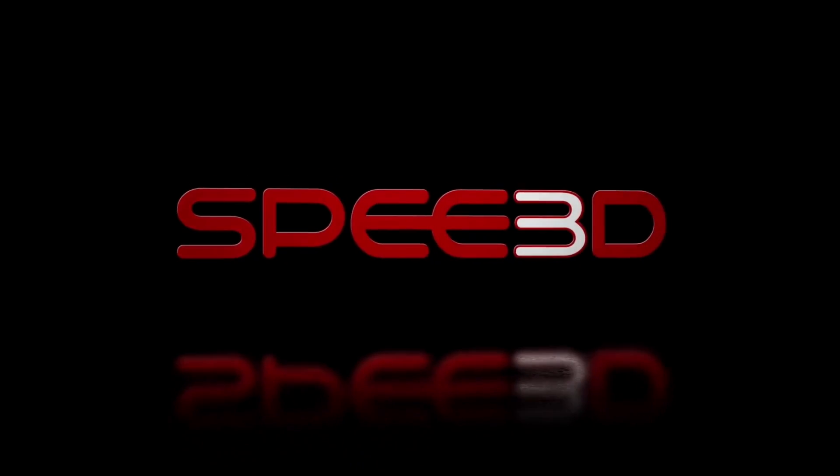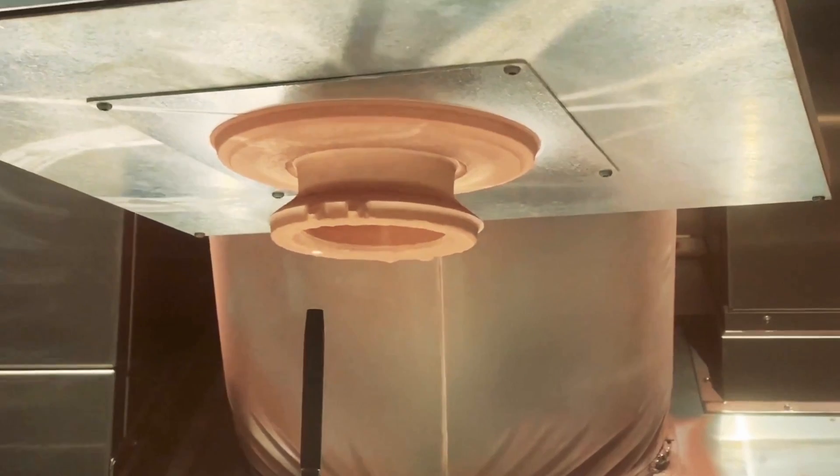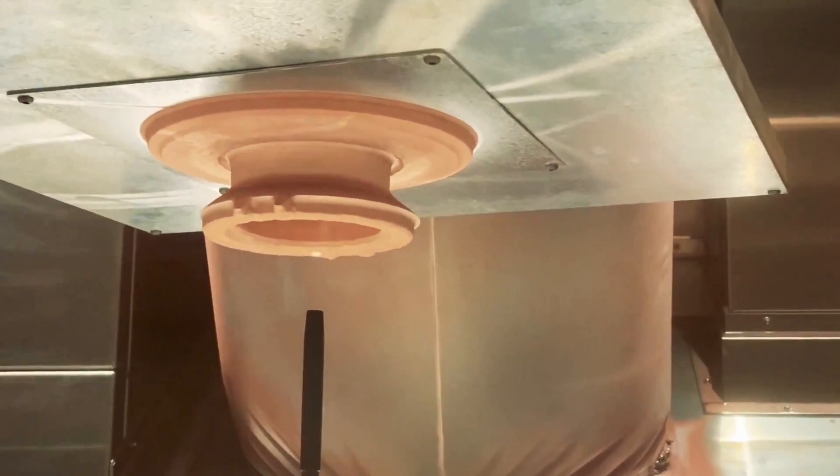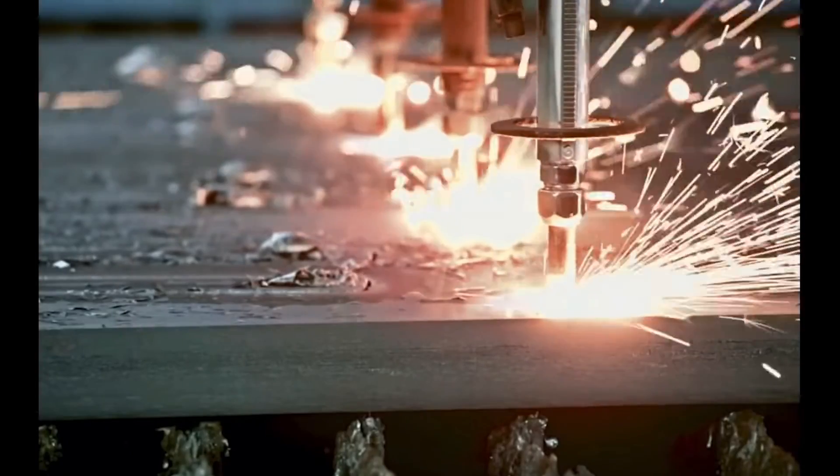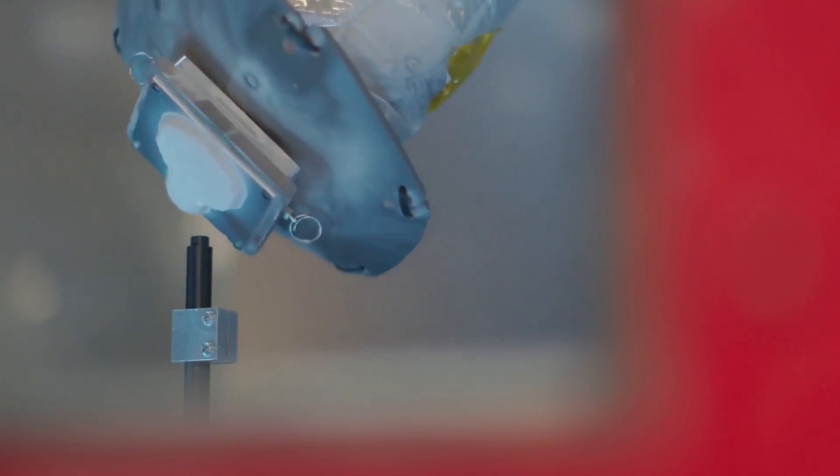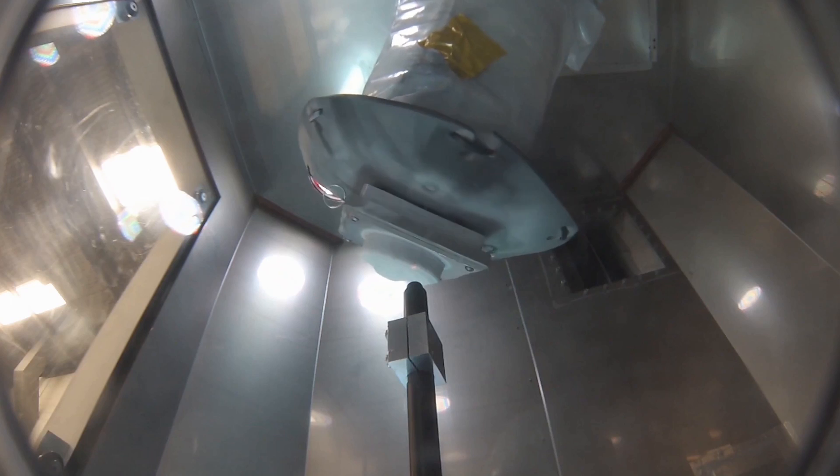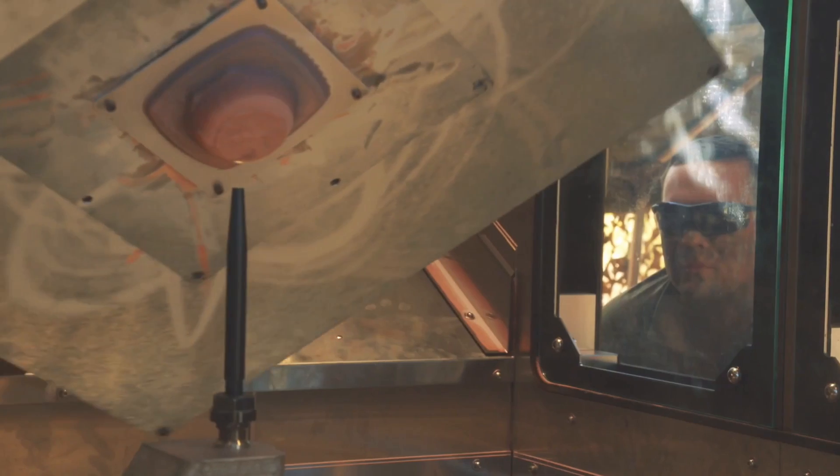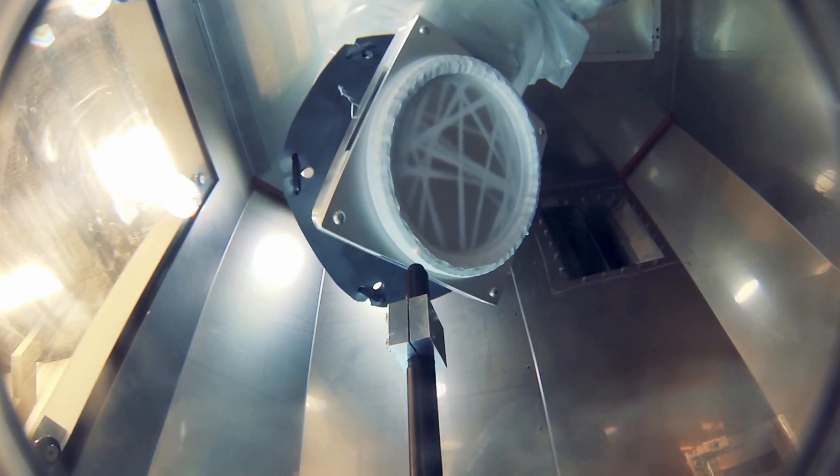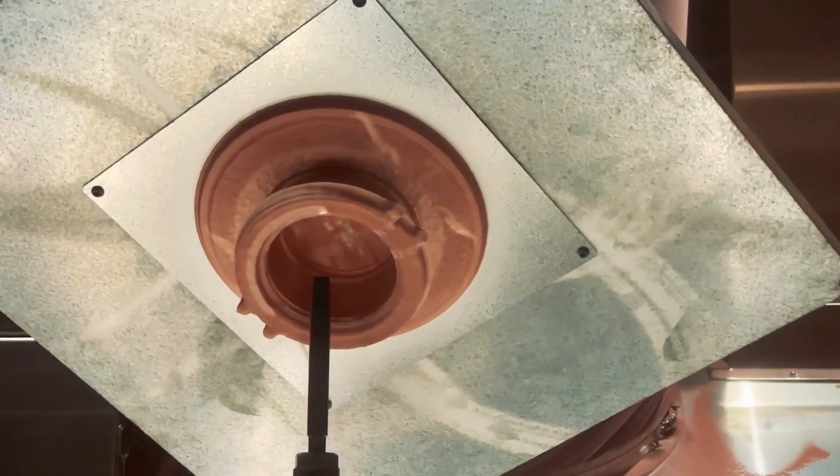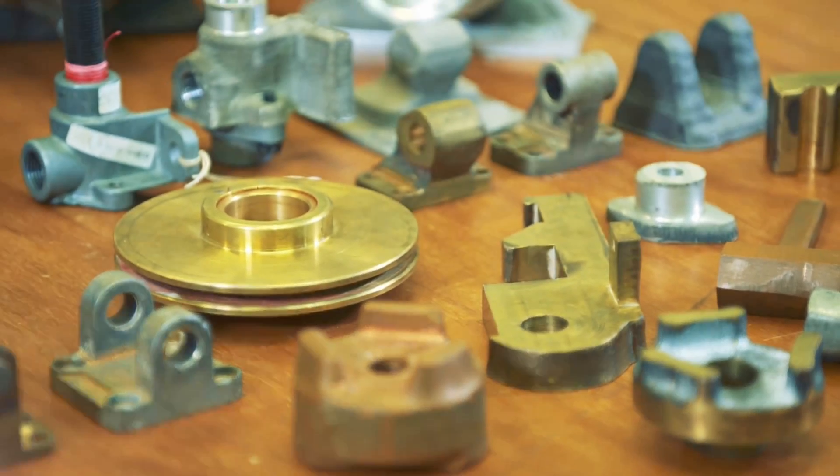Australian company Speed3D is making waves in the world of metal 3D printing with their unique supersonic technology. Instead of using traditional methods such as laser powder bed fusion or electron beam melting, Speed3D's printer blasts fine metal powder at supersonic speeds onto a target, causing instantaneous molecular fusion. This allows for the quick building of large metal objects, as demonstrated by the company's ability to print a 629-gram copper hammer in just 372 seconds.